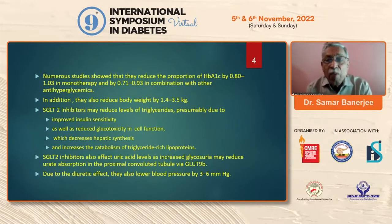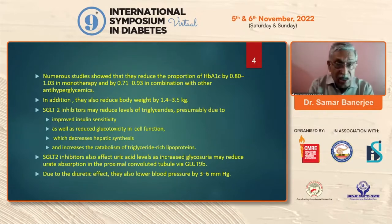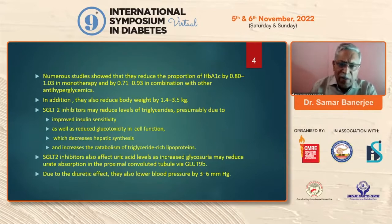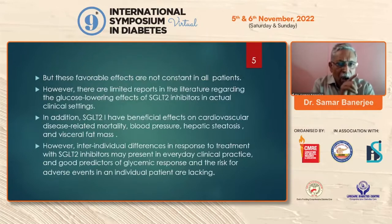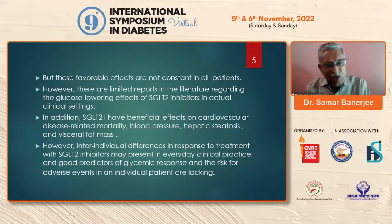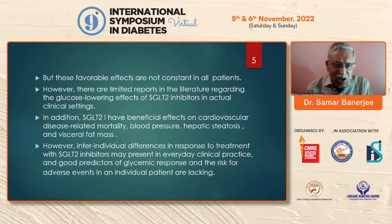Numerous studies showed that SGLT2 inhibitors reduce HbA1c up to 1.03% in monotherapy and by 0.7 to 0.93% in add-on therapy. They also reduce body weight, improve insulin sensitivity, reduce glucotoxicity, decrease hepatic synthesis and increase catabolism of triglycerides, affect uric acid levels due to the diuretic effect, and lower blood pressure by up to 6 mmHg. In addition, they have beneficial effects on cardiovascular disease, blood pressure, hepatic steatosis, visceral fat mass. We are now getting reports on Alzheimer's disease and cerebral stroke as well.